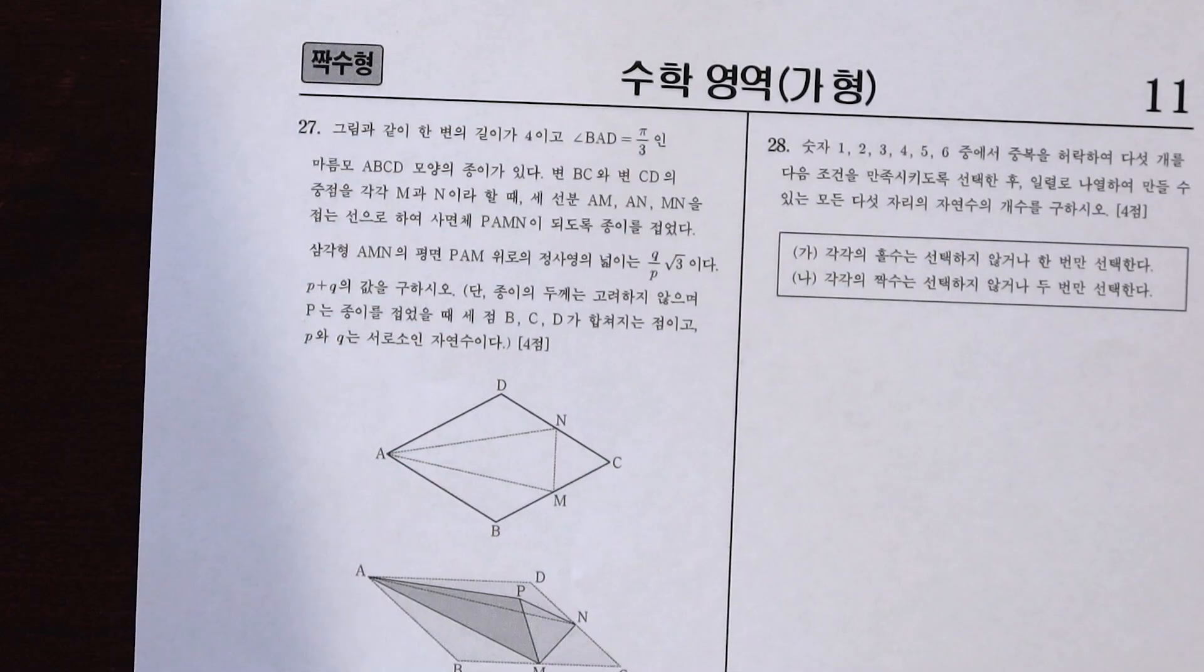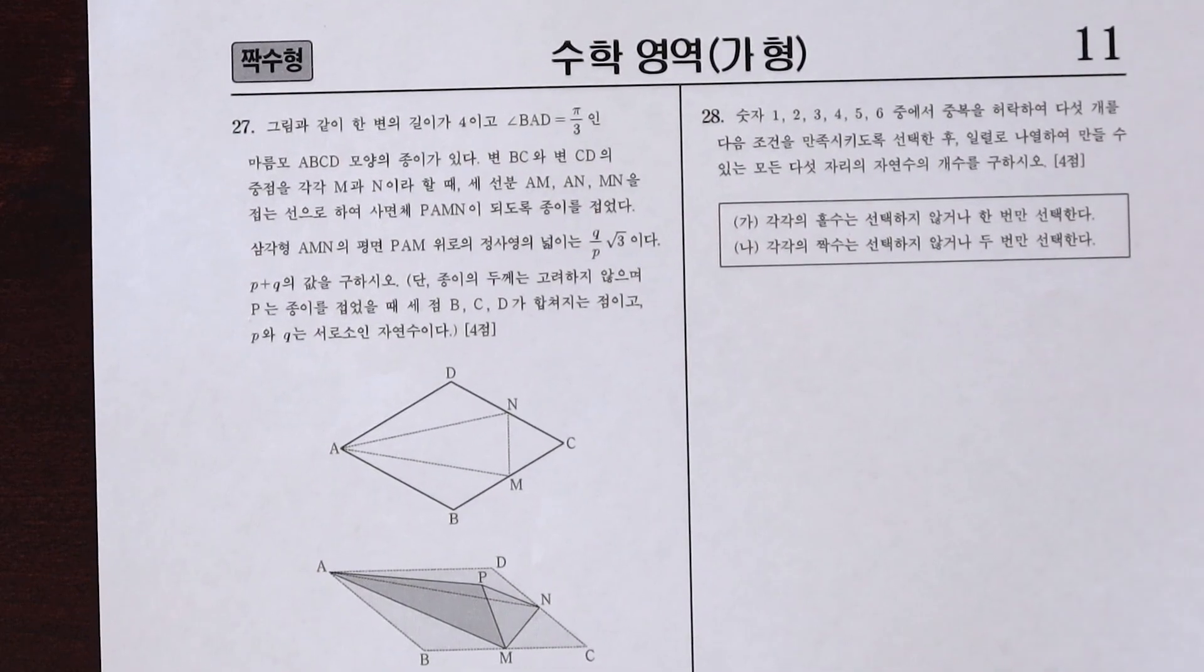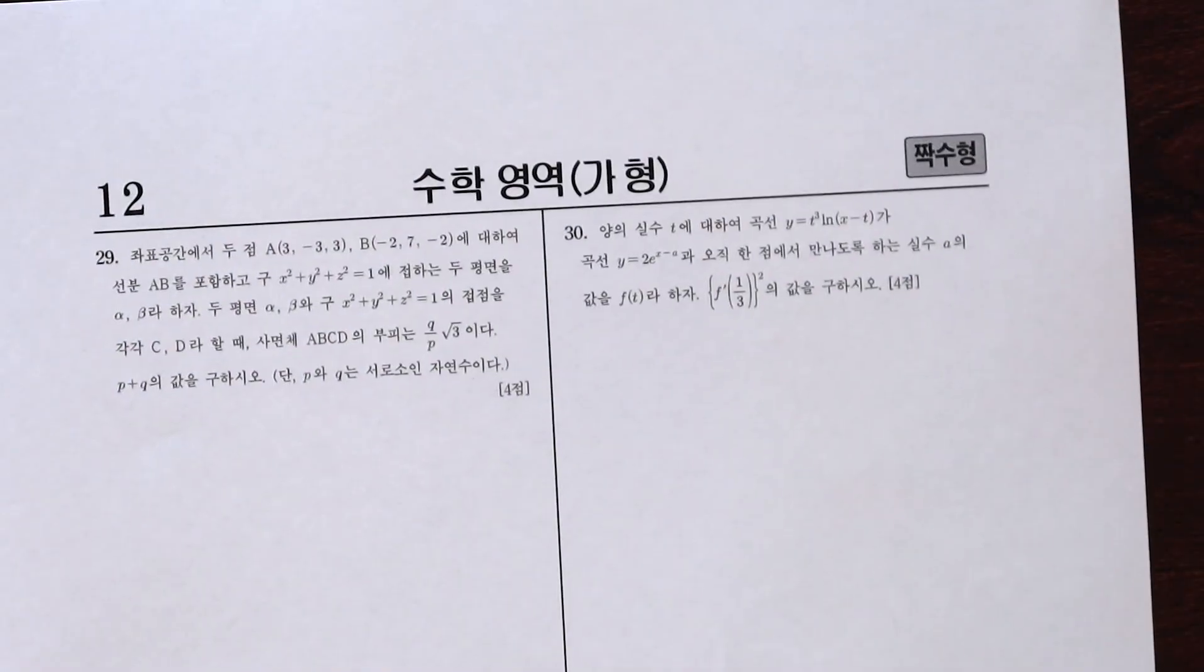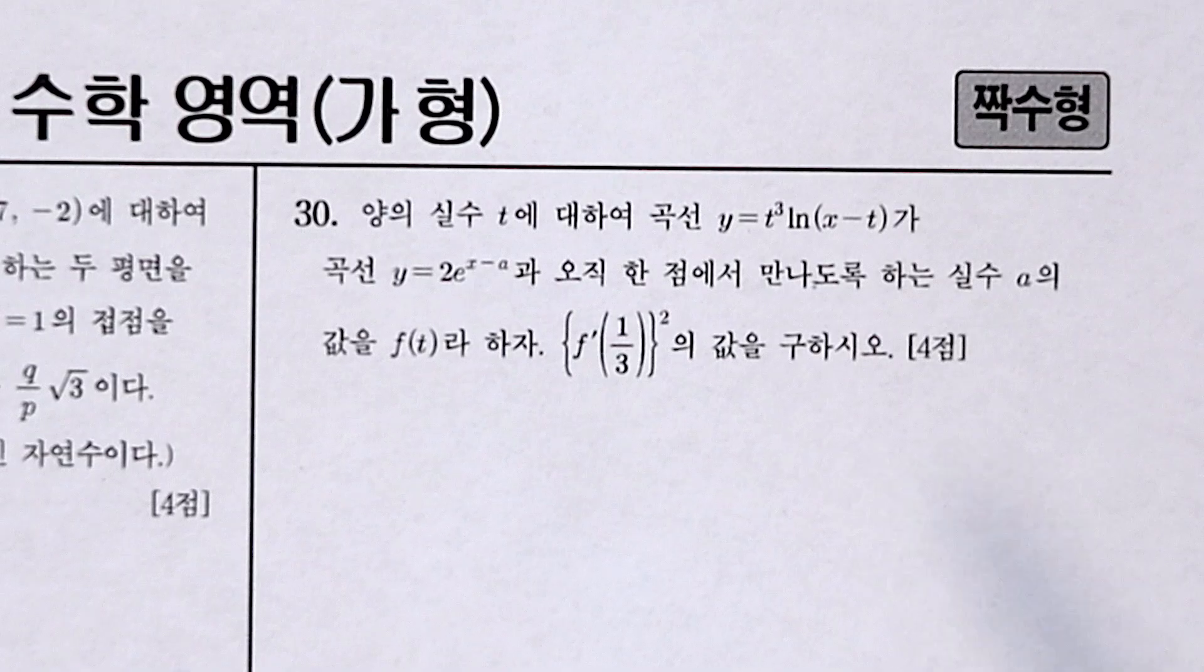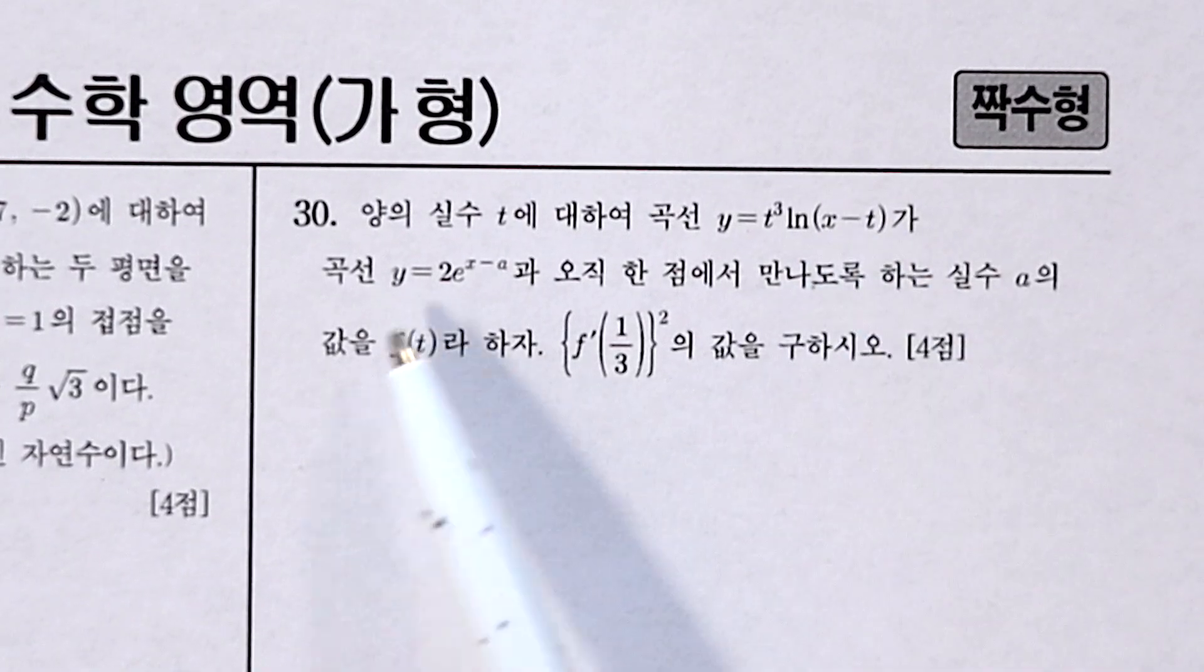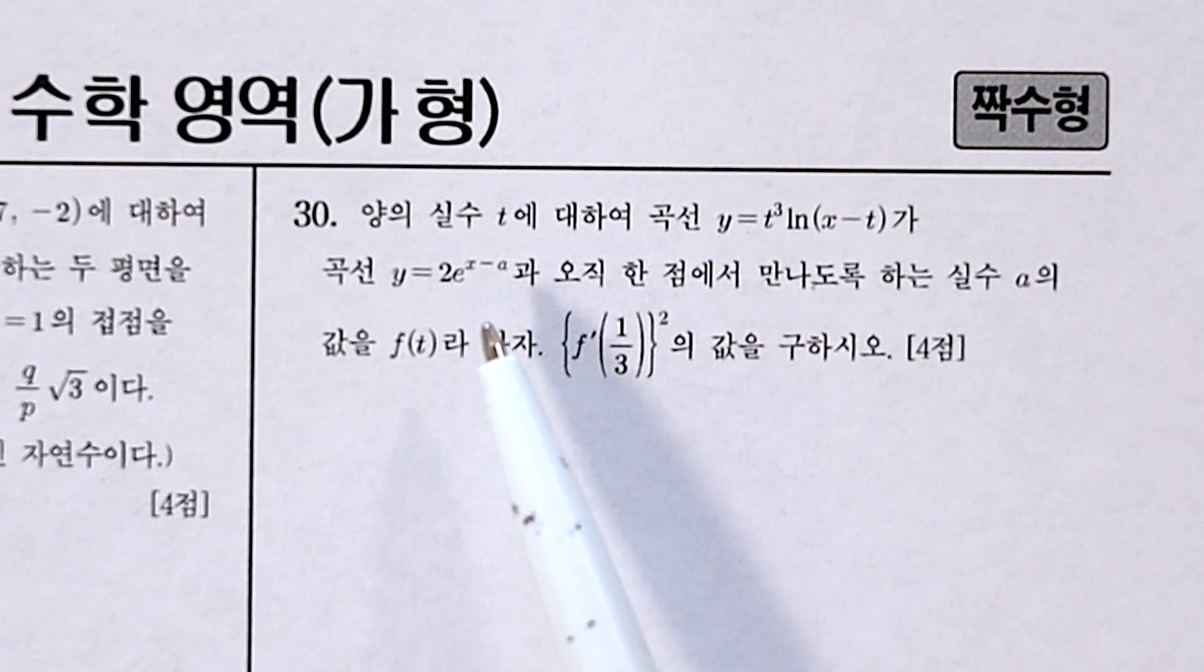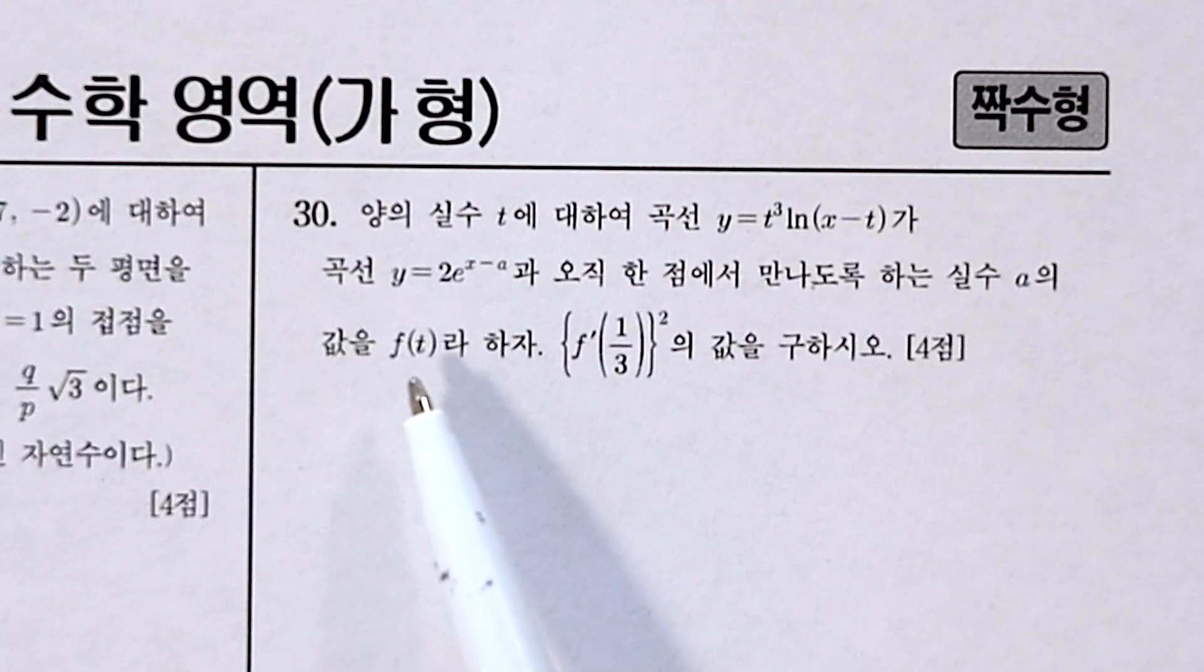I heard the notorious questions hide near the end so let's check out question 30 on this 2020 paper. What it says is that we have these two functions, one is a log and one is an exponential, and they meet at only one point when little a can be said to be f of t. It's a function of this variable t.